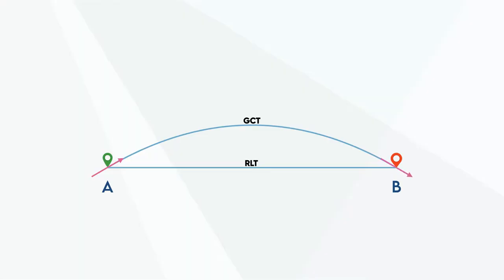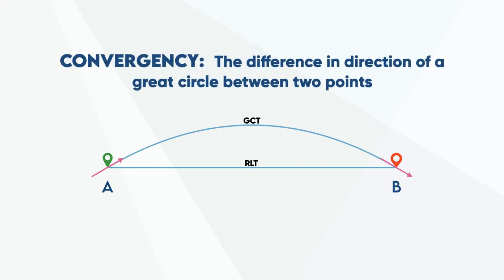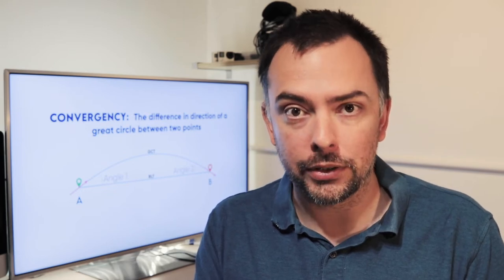The total convergency between these two positions is the total amount that our track changes. Look at the difference in direction of the two angles — firstly leaving A, basically looking like it's heading north-east, and by the time it gets to B, it's effectively heading south-east. So in terms of convergency between a rhumb line track and a great circle track, we can say that the total convergency is the sum of these two angles. In other words, convergency is the difference in direction of a great circle track between two points.